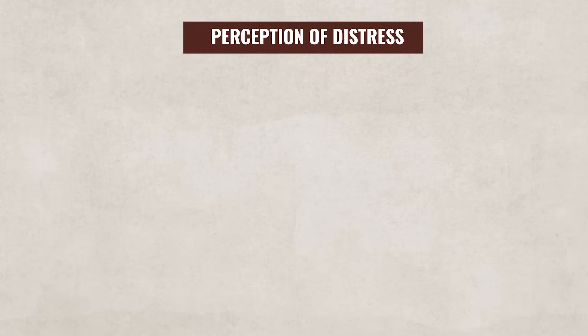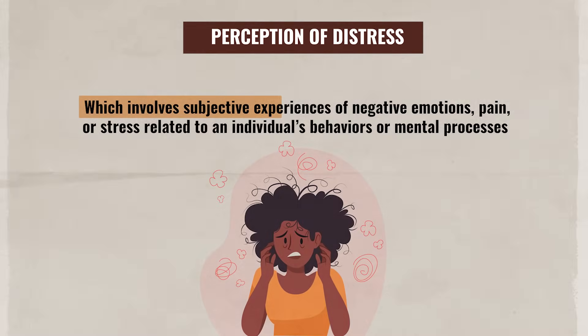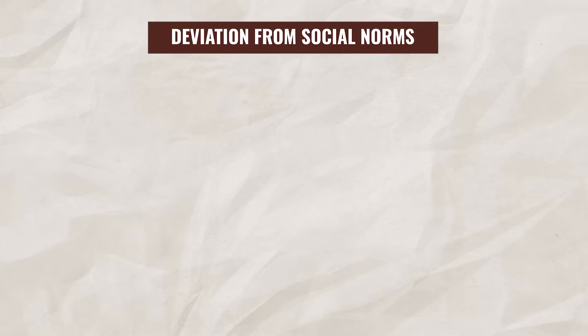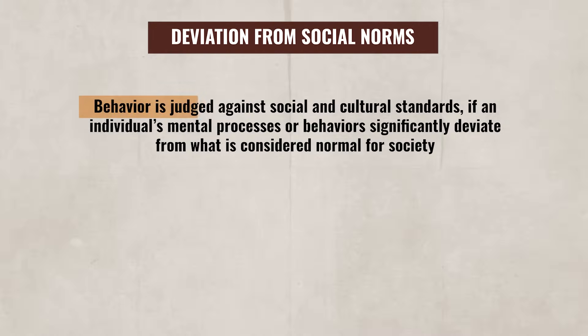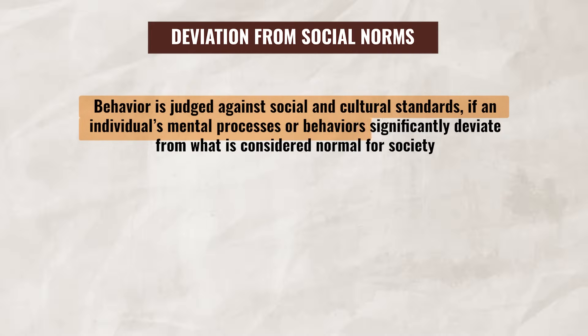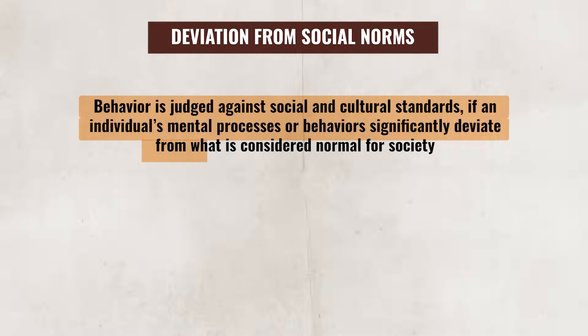The next factor is perception of distress, which involves subjective experiences of negative emotions, pain, or stress related to an individual's behaviors or mental processes. Oftentimes, mental health professionals will look to see how an individual is reacting to their own thoughts, feelings, and behaviors to better understand the level of distress that the individual is experiencing. Lastly, there's deviation from social norms. Behavior is often judged against social and cultural standards. If an individual's mental processes or behaviors significantly deviate from what is considered normal for society, it might be seen as a disorder.